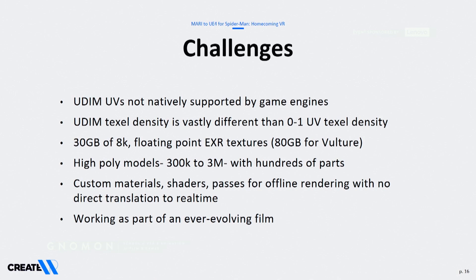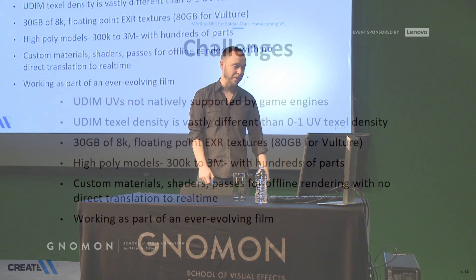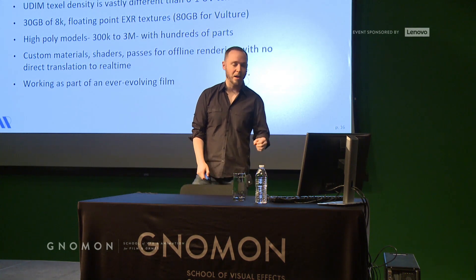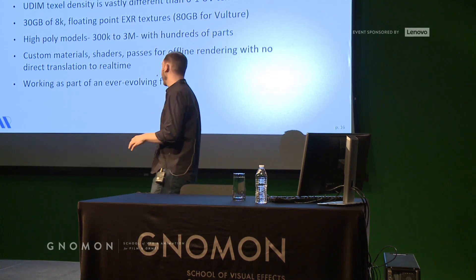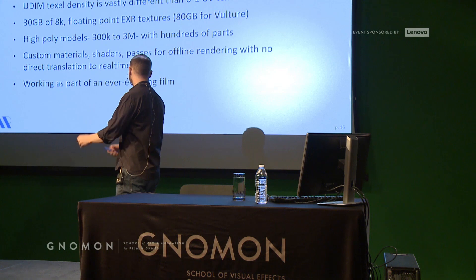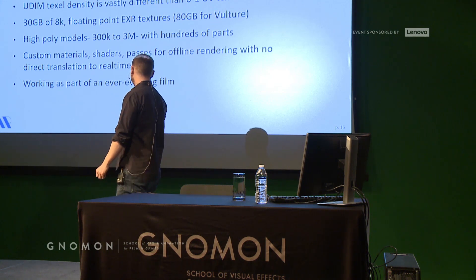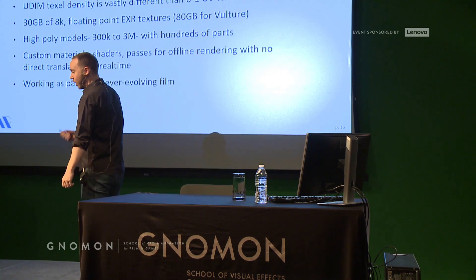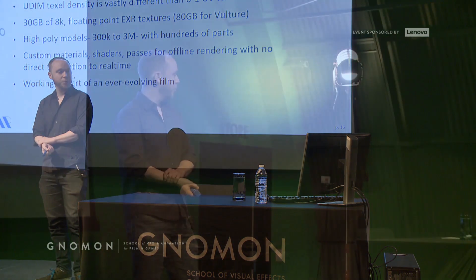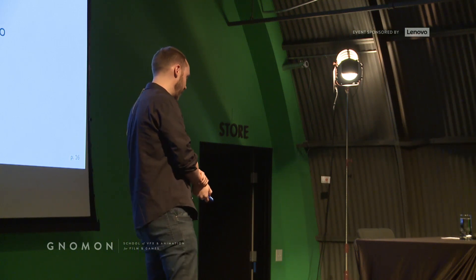The textures are just gigantic files — not only many passes and high res, they are also HDR EXRs. The models themselves: Spider-Man was 300-some thousand polys, Vulture was 3 million. They have hundreds of individual moving parts, especially Vulture. With VR performance, every new object in the scene is a big performance hit, and it's doubly so if it's part of a skeletal mesh.